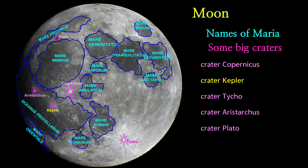Crater Kepler. Kepler is a lunar impact crater that lies between Oceanus Procellarum to the west and Mare Insularum to the east. Kepler is named for the 17th century German astronomer and mathematician Johannes Kepler. Kepler has three laws that are very important to understanding the movements of the planets in the solar system.